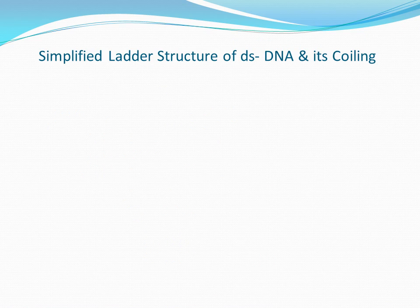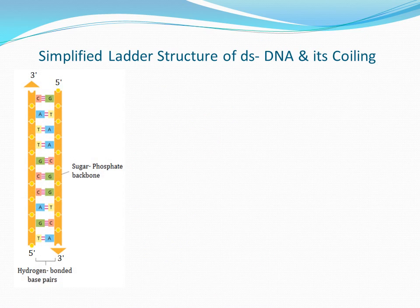We will now understand the making of double-stranded DNA and its further coiling. Two strands align themselves so that their bases lie opposite each other, and the strands follow anti-parallel orientation — meaning if one strand runs from 5' to 3' direction, the other strand runs from 3' to 5' direction. The bases also follow the complementarity rule: adenine always pairs with thymine with the help of 2 hydrogen bonds, and cytosine pairs with guanine with the help of 3 hydrogen bonds. Following these rules, a duplex or double-stranded DNA is made.